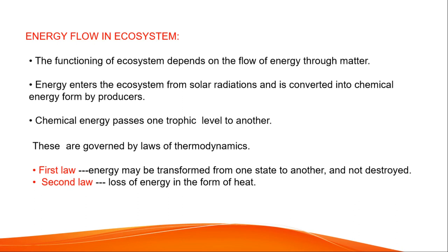Next, energy flow in the ecosystem. The functioning of the ecosystem depends on the flow of energy. Energy enters the ecosystem from solar radiation and is converted into chemical energy by producers. This chemical energy passes from one trophic level to the next — producers to herbivores, herbivores to carnivores — as energy transfer at each trophic level.